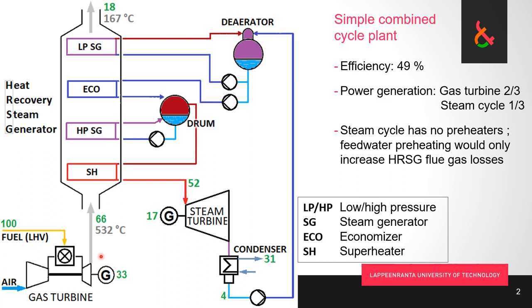We are producing superheated steam without burning anything — we take everything from the gas turbine exhaust gas. From 66 units going in, we get 52 units of energy in the steam into the steam turbine, producing less power than the gas turbine but still a good amount. We dump most of the energy out to the environment in the condenser, as we remember from the steam power plant lectures, and the condensate has some residual energy that we cycle back.